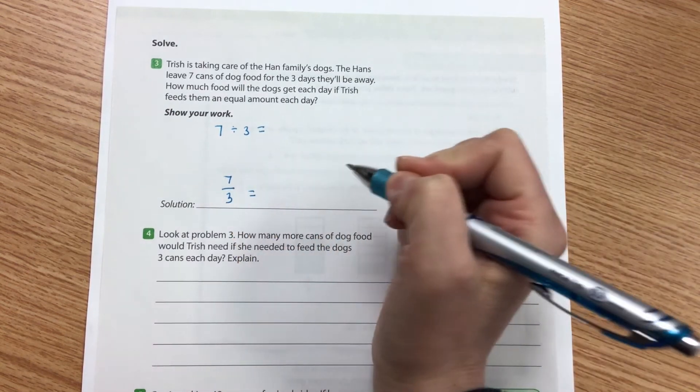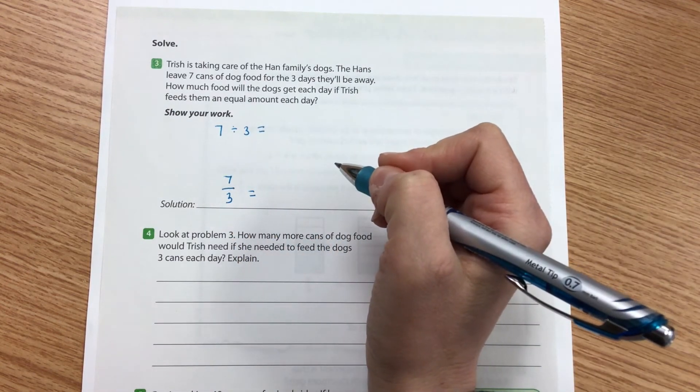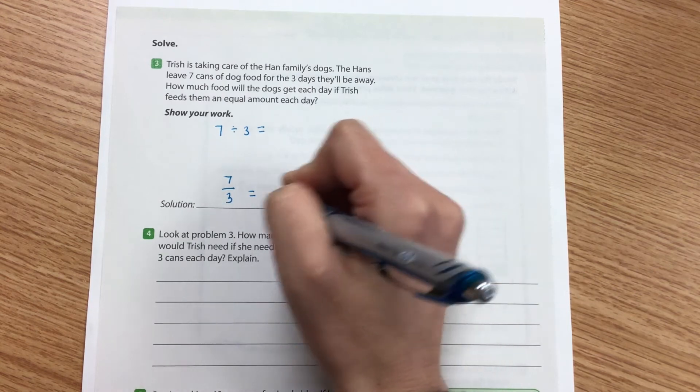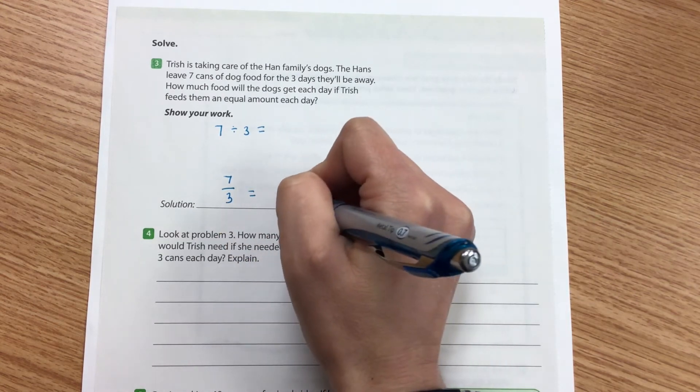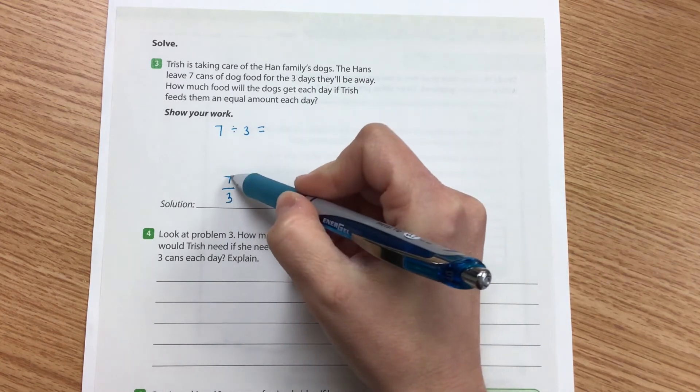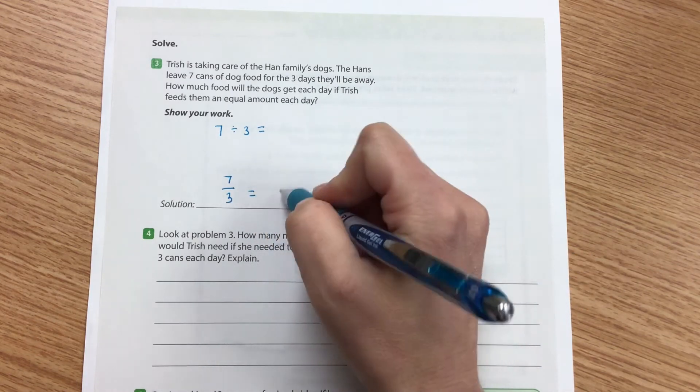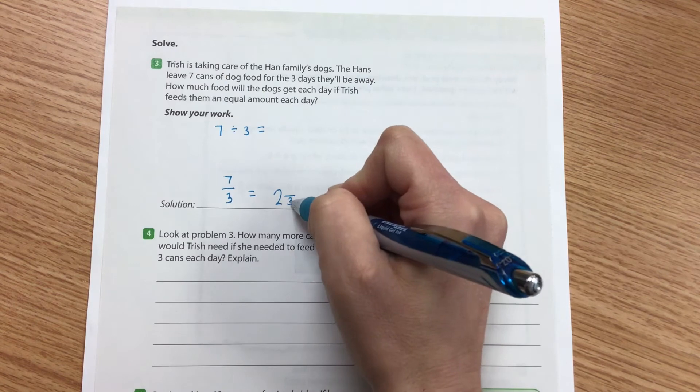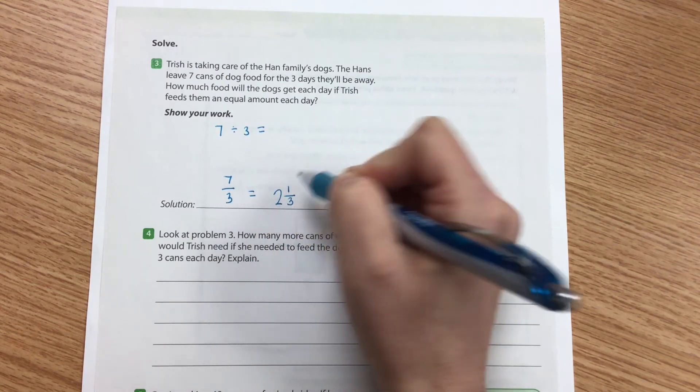And I'm going to go ahead and turn this into a mixed number. That way it's a little bit more meaningful for me for an answer. My denominator is going to be three. It's the same thing. How many times can three go into seven? That's two times because three times two is six. One more gets me up here to seven.